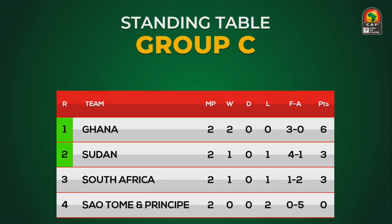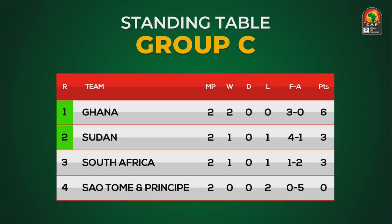In group C, the top of the table is Ghana, followed by Sudan in second, South Africa and São Tomé and Príncipe below it.